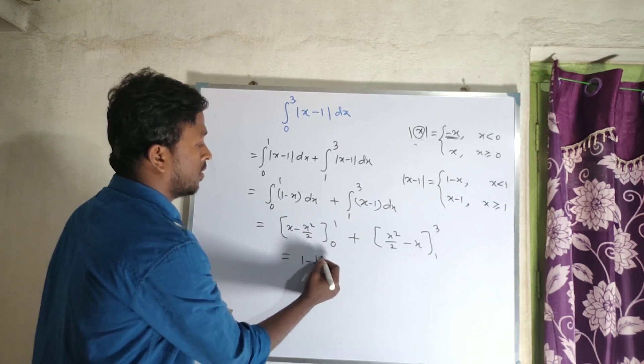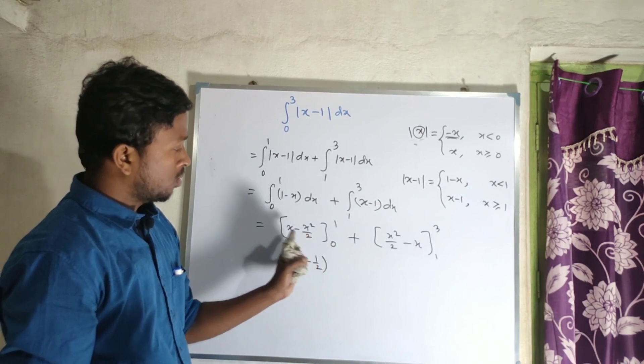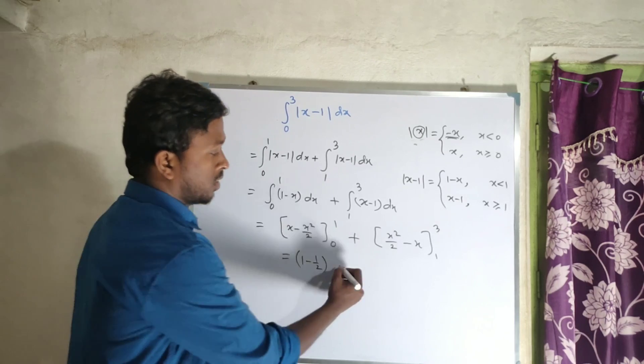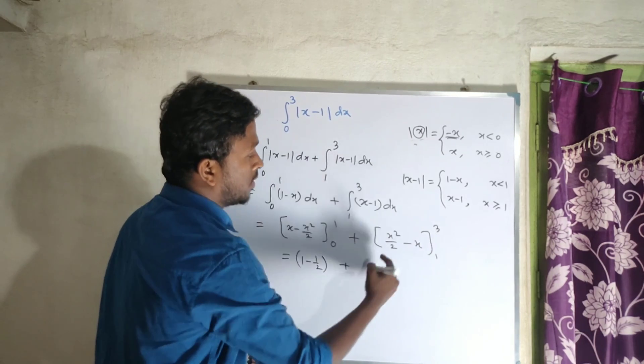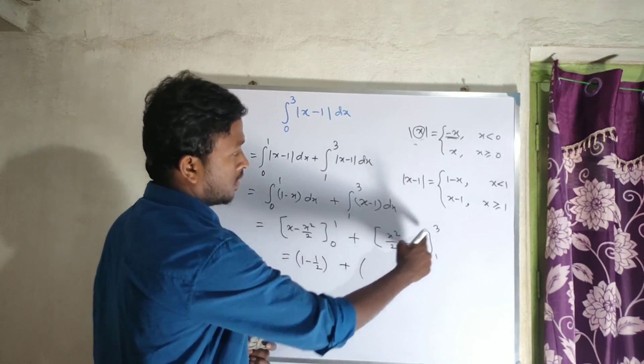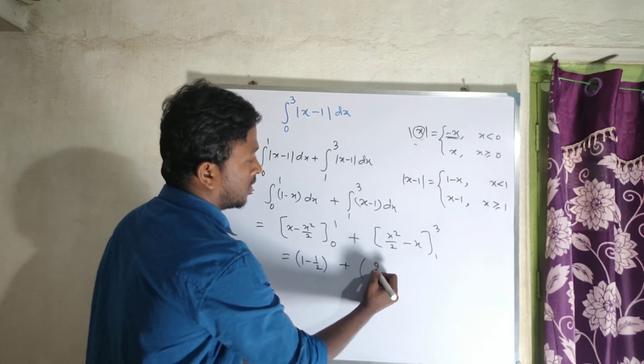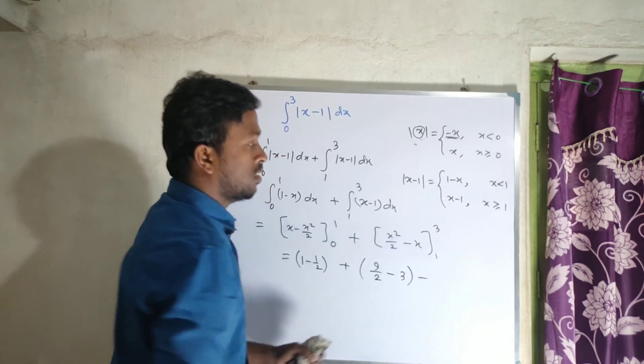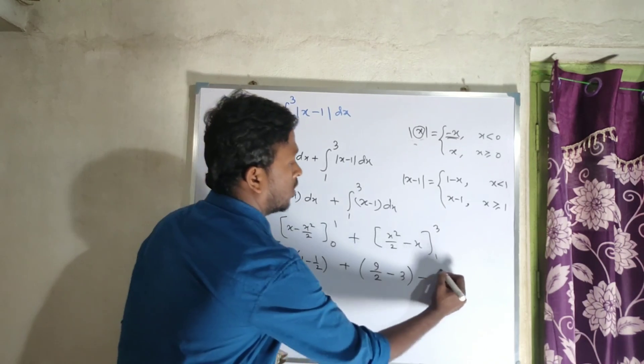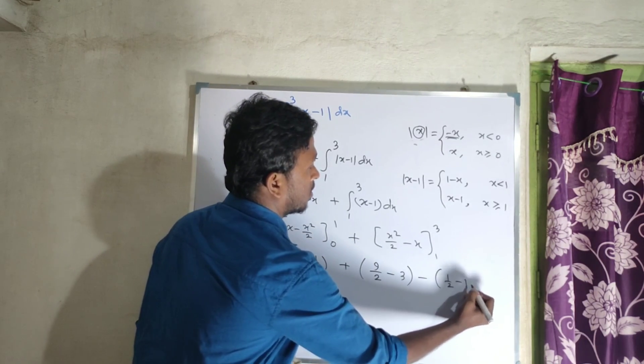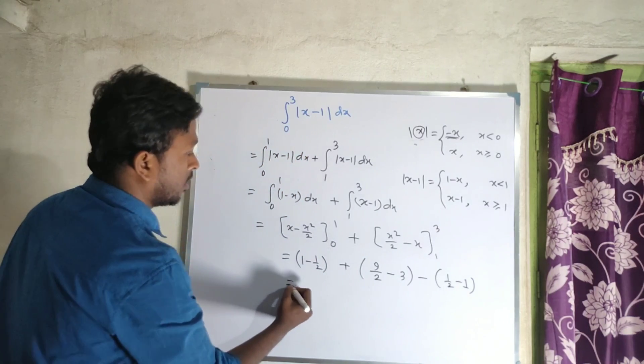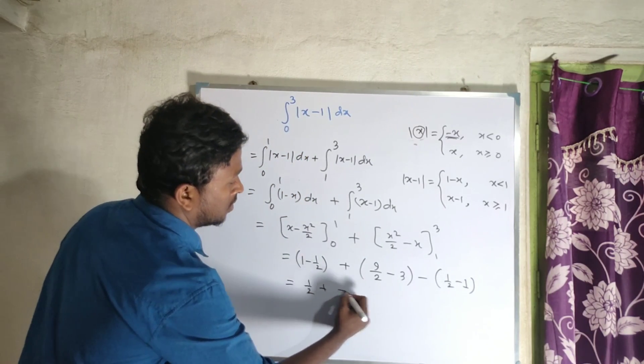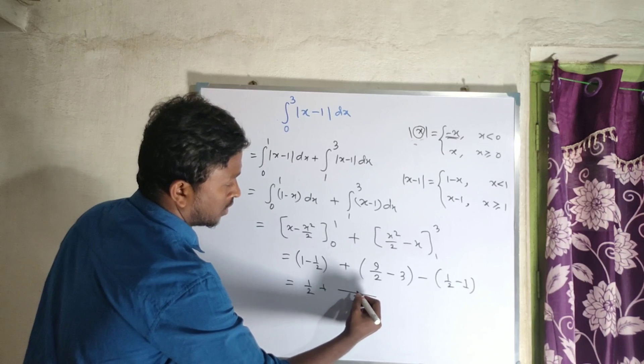Now applying the limits. First, the upper limit: 1 minus half. The lower limit is zero, which gives zero. Plus applying limit 3: 3 squared by 2, that is 9 by 2 minus 3. And the first part minus lower limit 1: 1 by 2 minus 1, which is minus half.